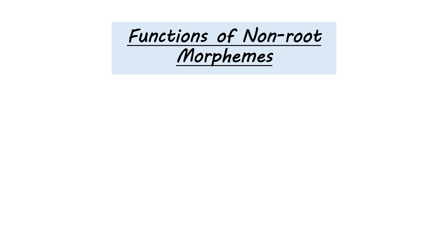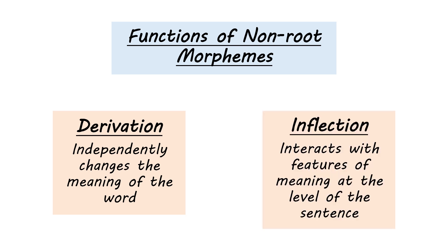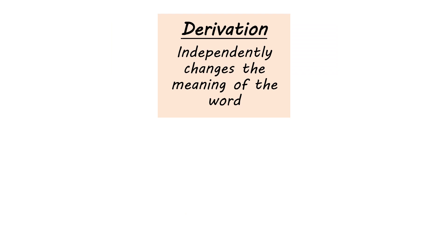We've talked about how the function of a root is usually to provide the central meaning of a word. Now let's talk about the different functions performed by non-root morphemes — affixes and non-concatenative morphology. These non-root morphemes can either be derivational, which take the root meaning and independently alter it to make something different, or they can be inflectional. Inflection interacts with features of meaning at the level of the sentence. We'll start by looking at derivation, where you add meanings together and get a new meaning predictably.